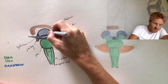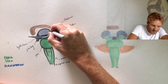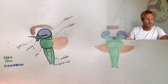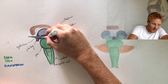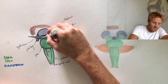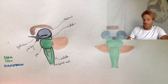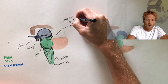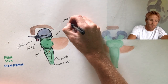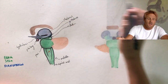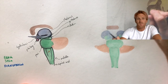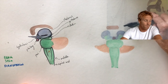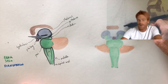Just behind the thalamus is a small structure called the epithalamus. It's part of the diencephalon but is not nearly as important as the hypothalamus. However, it does contain the pineal gland, which produces melatonin, helping with our ability to sleep and our day-night cycle.